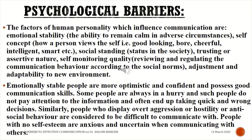Emotionally stable people are more optimistic and confident and possess good communication skills. Some people are always in a hurry and such people do not pay attention to information and often end up taking quick and wrong decisions. Similarly, people who display overt aggression, hostility, or anti-social behavior are considered difficult to communicate with. People with no self-esteem are anxious and uncertain while communicating with others.